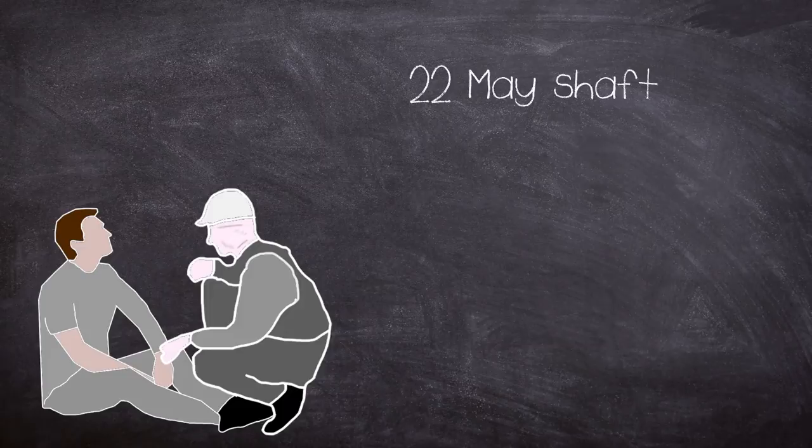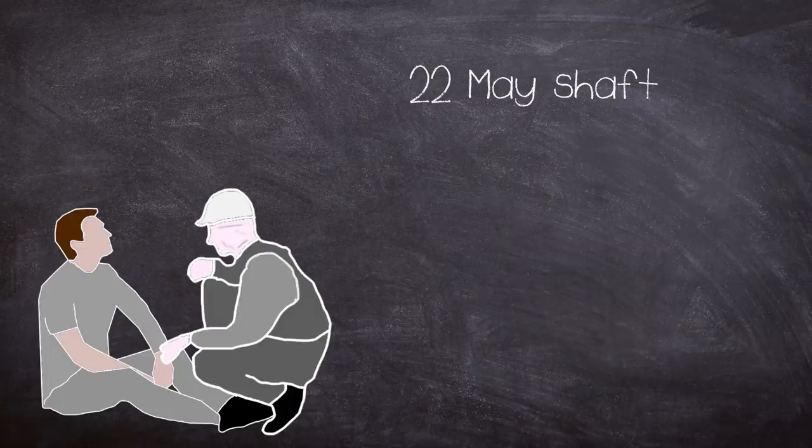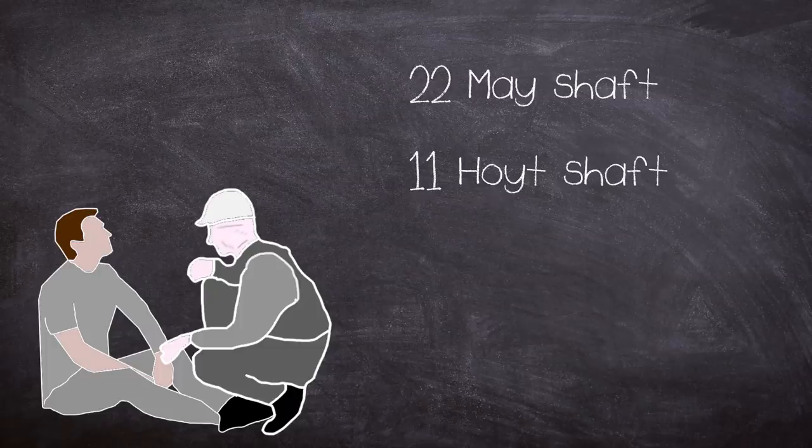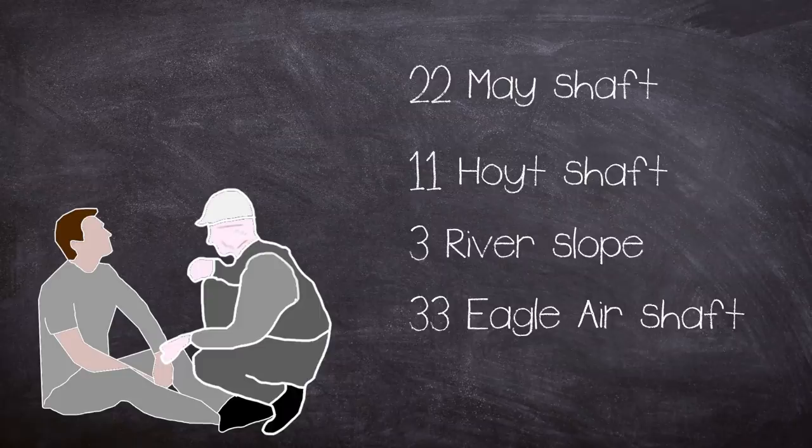22 escaped through the May shaft. Some by the time they had made their escape had to wade through the flooding tunnels. 11 men escaped via the Holt shaft and 3 left via the river slope. 33 made it to safety via the abandoned Eagle air shaft.